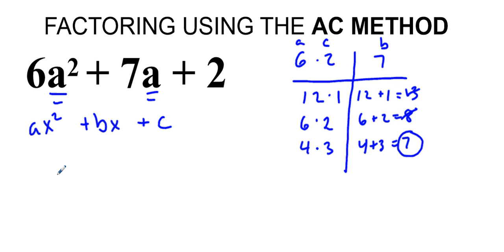So what we do next is, after we find the factors, we're going to now set this up. We're going to take 6a squared, and since these are the factors that make b, these are going to be the coefficients next to our a value. So we're going to have 4a plus 3a, and it's going to be plus 2.